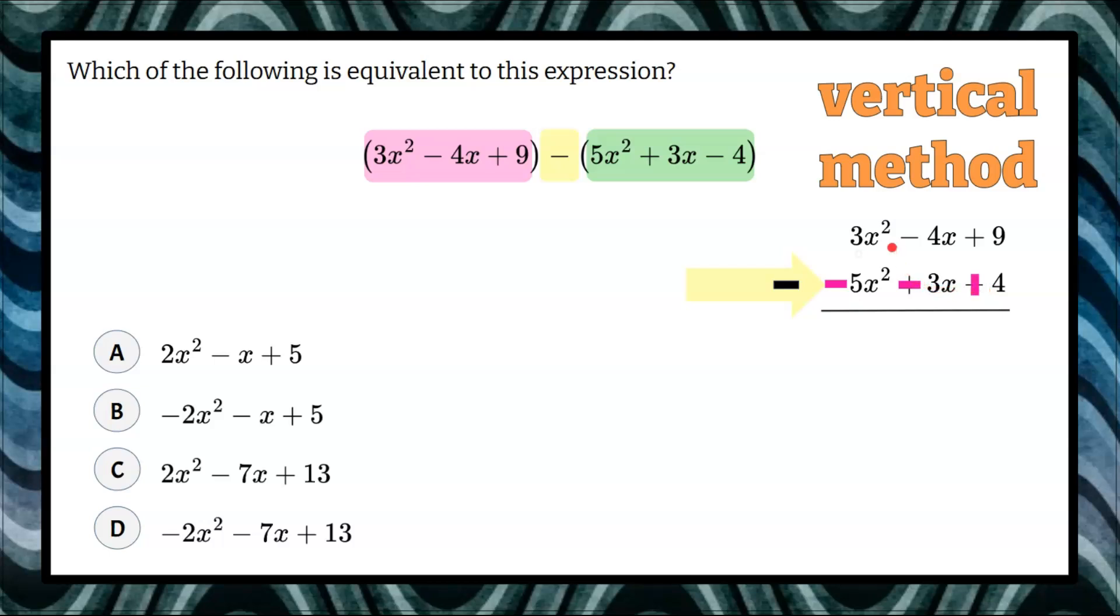All right, let's do this. Our like terms are stacked. 3x² subtract 5x² is negative 2x².